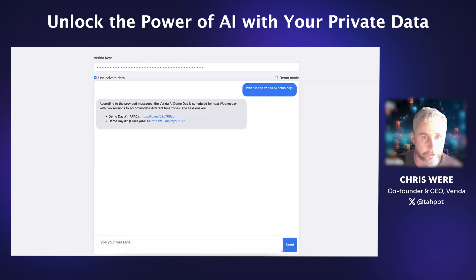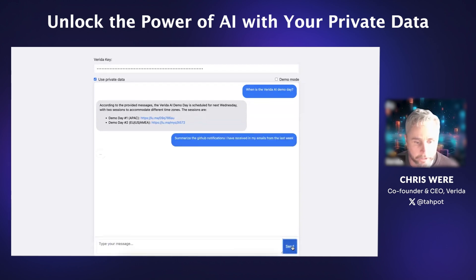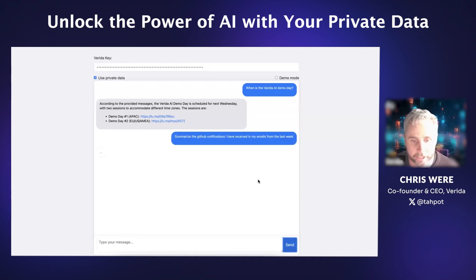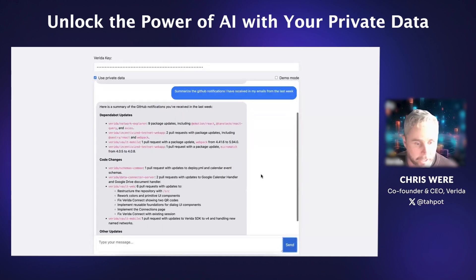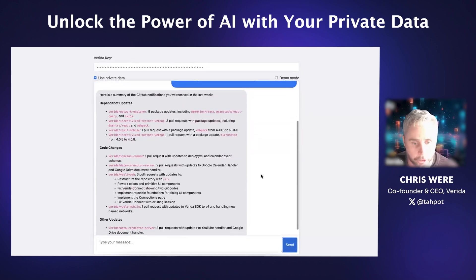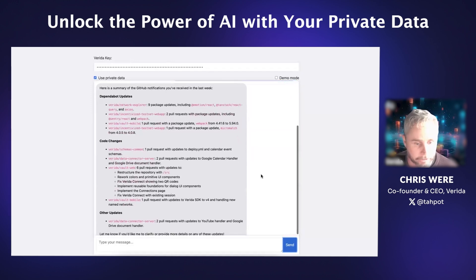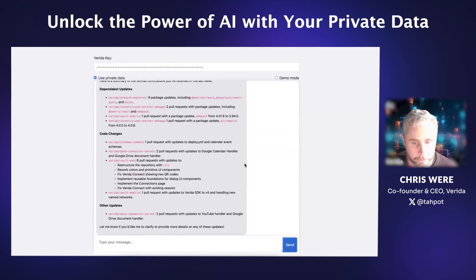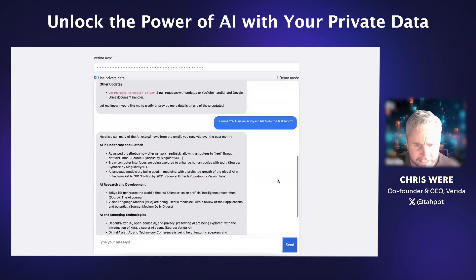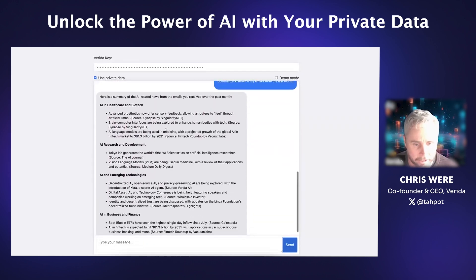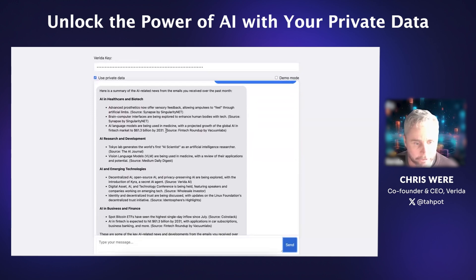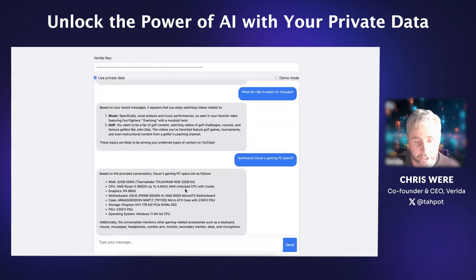I'm going to walk through a few different ones here. I can say: summarize all the GitHub notifications I've received in my emails. And this has obviously gone through a whole bunch of different emails and put that together for me. Here I've said: summarize the AI news in my emails from the last month — so obviously I get a fair bit of content from newsletters.